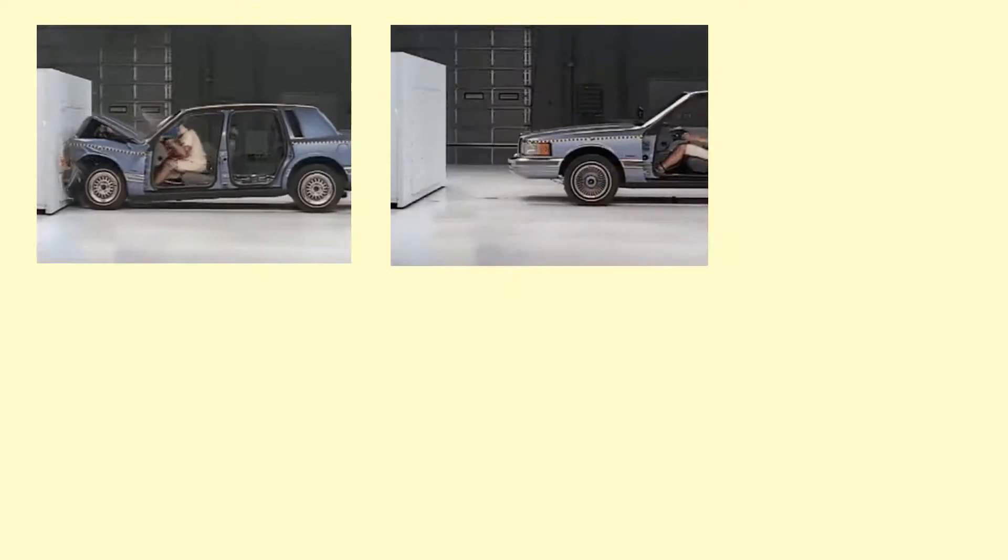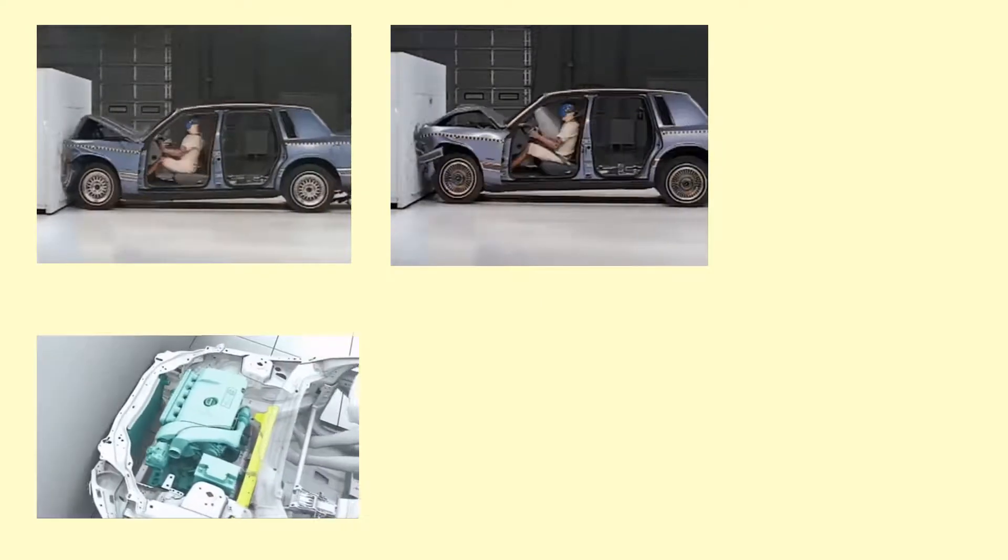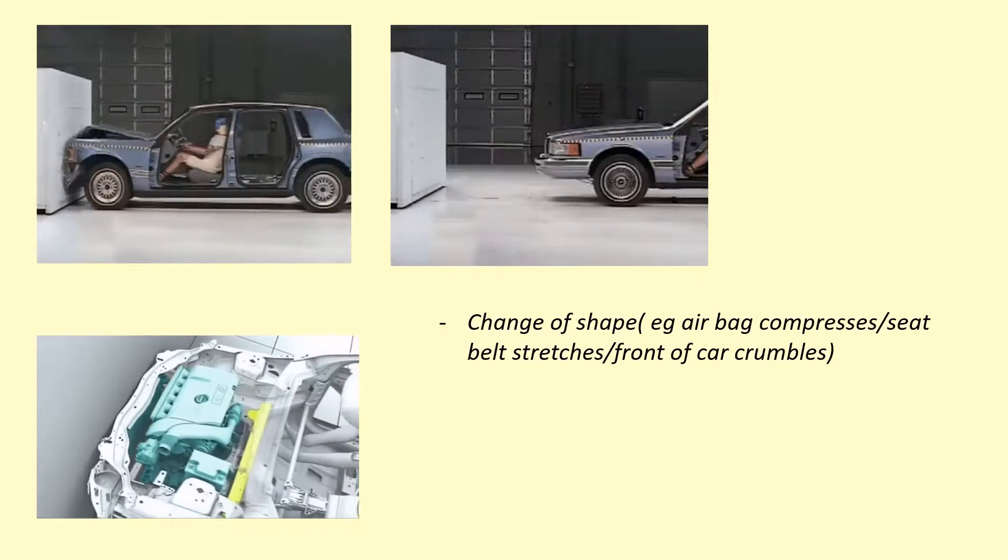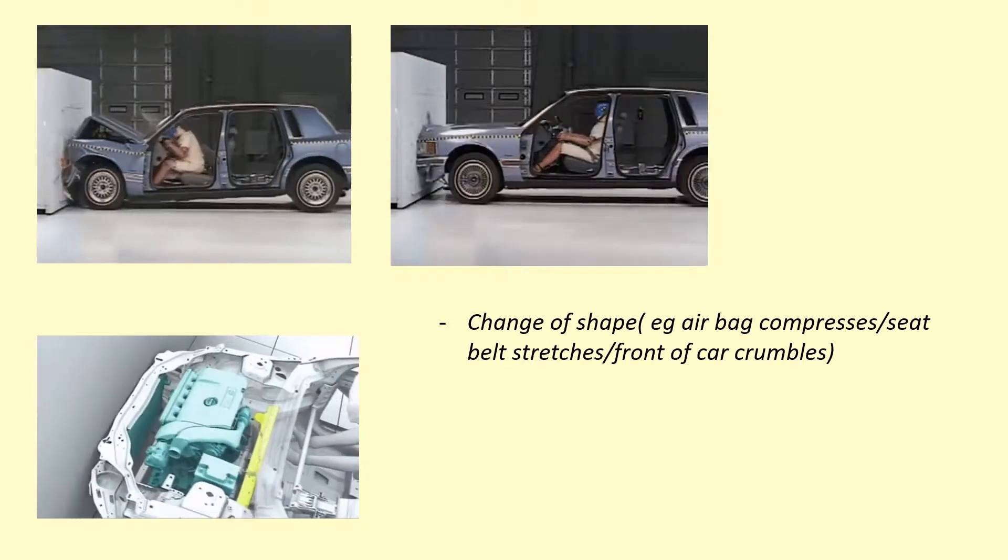However, with safety features like airbags, seatbelts, and also this crumple zone here, they all work in the same way. What they all do is they change shape somehow, so the airbag compresses, the seatbelt stretches a bit, and the crumple zone crumples.